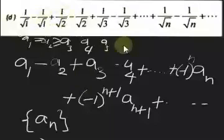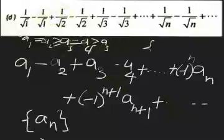Continuing, this term equals this one, and this term equals this one — and so on. Generally, the sequence is monotonically decreasing.